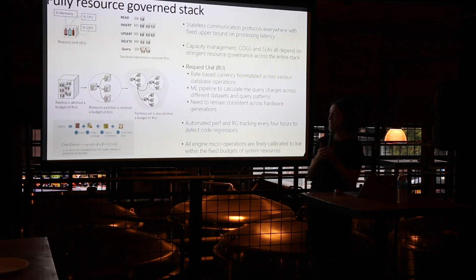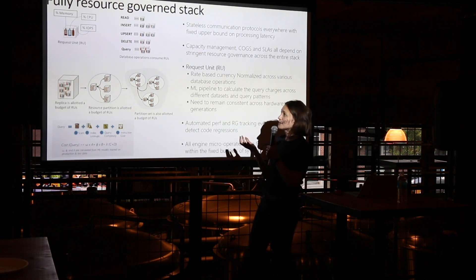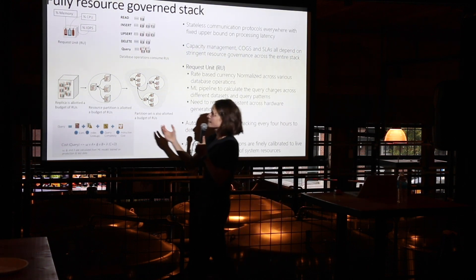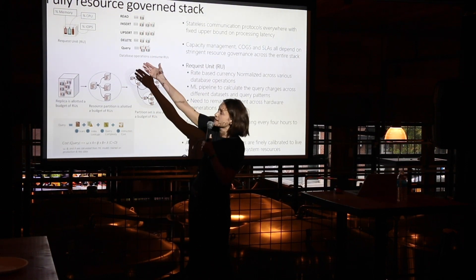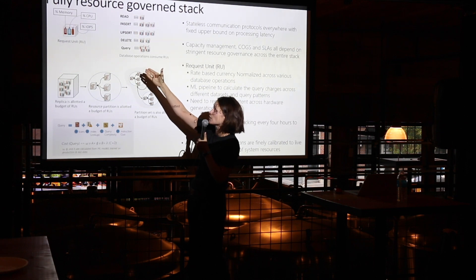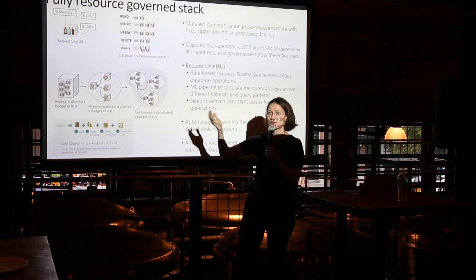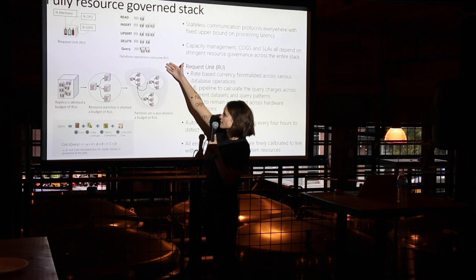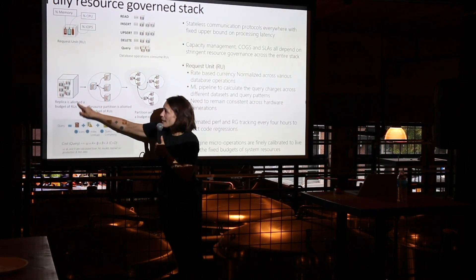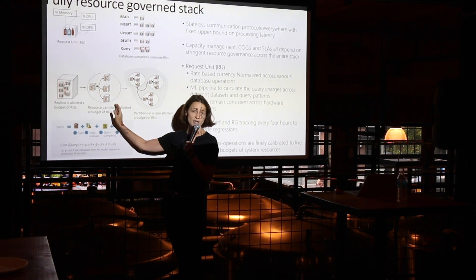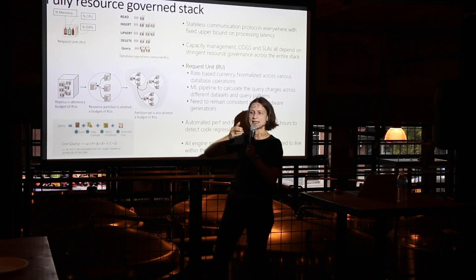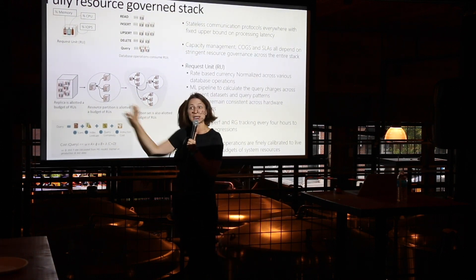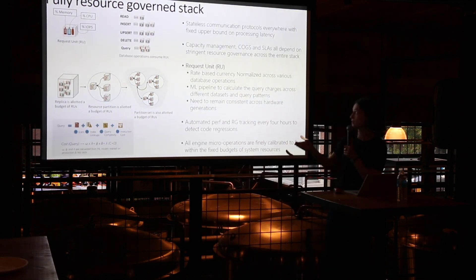Resource governance is another very important component of the system. Cosmos DB uses a provisioned throughput model, very similar to what DynamoDB offers, but the difference is our request units abstract physical resources like percentage of memory, percentage of CPU, and percentage of IOPS, and they're applicable to all operations you're running. You don't need to do separate capacity management for reads or writes — all operations are covered. Behind the scene, replicas belonging to the partition get a budget of request units, and we provide resource governance to guarantee that when you ask for 10,000 transactions per second, those resources are fully allocated to you and completely ring-fenced from all other tenants.